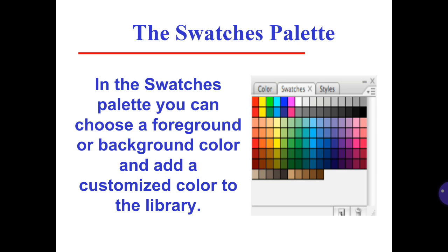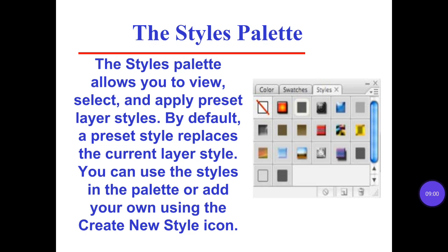In the Swatches palette, you can choose a foreground or background color and add a customized color to the library. The Styles palette allows you to view, select, and apply preset layer styles. By default, a preset style replaces the current layer style. You can use the styles in the palette or add your own using the Create New Style icon.